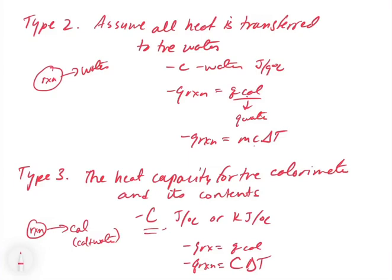We're going to look at two examples working through these different types. Remember, from a fundamental perspective, all three types are the same thing — the calorimeter is heating up or cooling down and we're measuring the delta T. It's just a matter of how we use the different heat capacity equations to account for what's given in the problem.